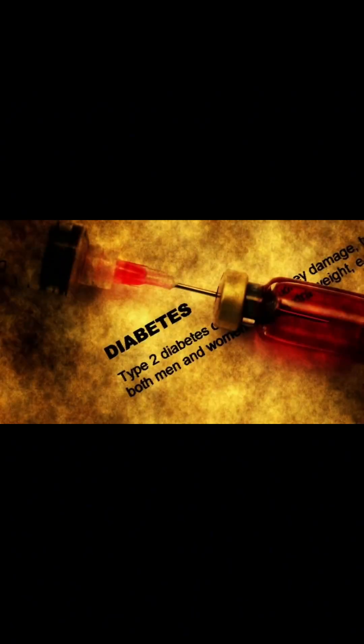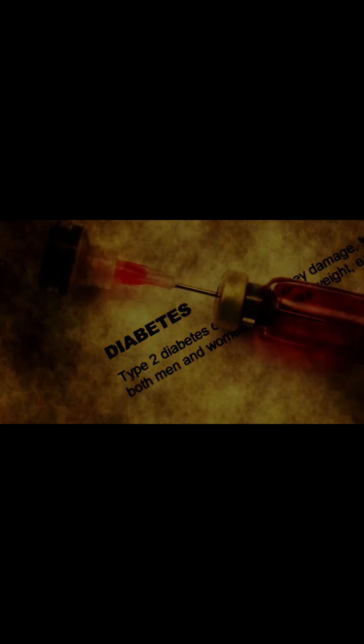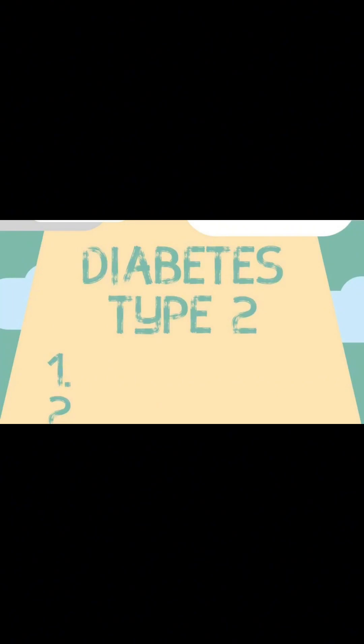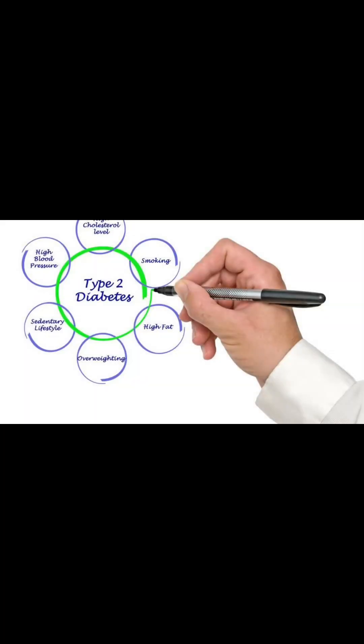Type 2 diabetes is the most common form of diabetes, accounting for the majority of cases worldwide. It typically develops in adulthood, although it is increasingly being diagnosed in children and adolescents due to rising obesity rates. Type 2 diabetes is characterized by insulin resistance, where the body's cells fail to respond effectively to insulin, leading to elevated blood sugar levels.